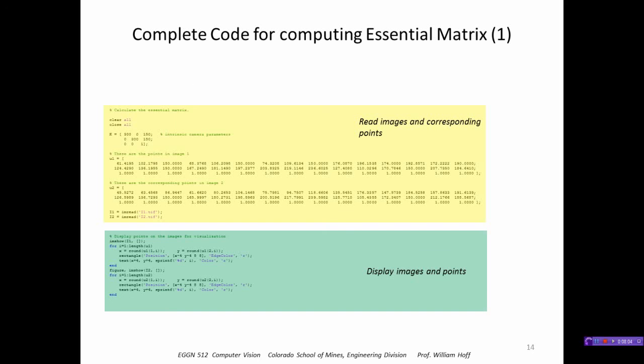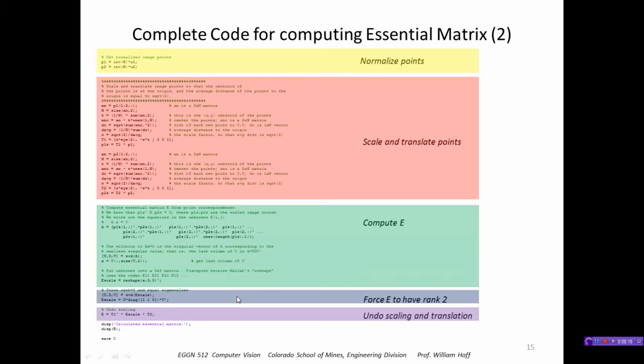This is the complete code for calculating the essential matrix. This first part reads in the data—the corresponding image points—and displays them. This is the code that calculates the essential matrix: we first normalize the image points by multiplying by the inverse of the camera calibration matrix. This is the part that does the scaling and translation of the points. This is the part that computes the essential matrix. Here's where we do the post-conditioning to enforce E to have rank two. And here is where we undo the scaling that we did earlier.